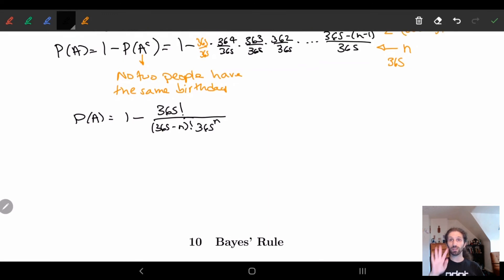One might ask: when do we get roughly 50 percent? If we have 190 people, so n equals 190, then the probability of A is 1 minus 365 factorial over 365 minus 190 factorial times 365 to the 190. What we get is 1 minus 3.26 times 10 to the minus 27. In other words, a really really big number, almost guaranteed.